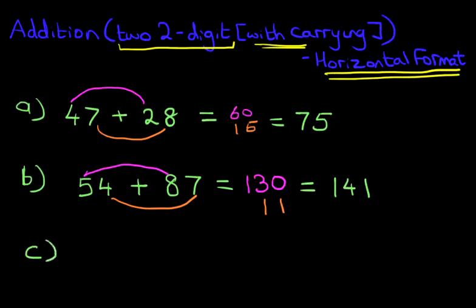Now we'll do one more. This time we have 78 plus 65. So what is 78 plus 65? Now this time we're going to try to do this in one step. In other words, we're not going to write down the interim numbers in the middle.